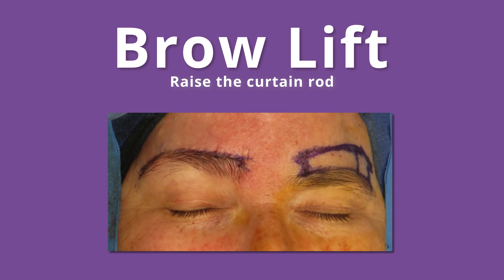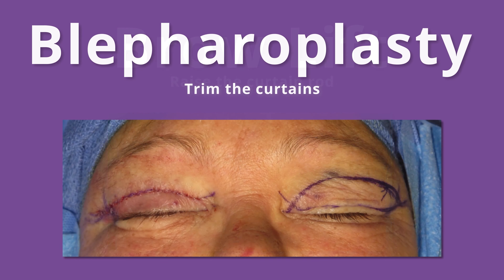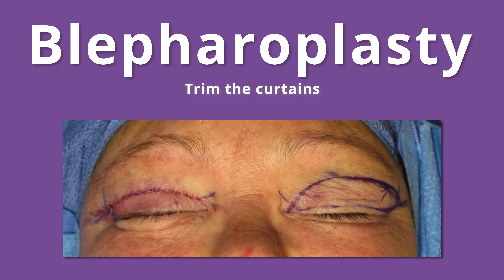This is a picture of a patient who's halfway through a brow lift — this is raising the curtain rod. On her right side, you can see the incision has been closed, the brow is elevated and has a nice shape. The left side hasn't been done yet, but you can see the marking where it's going to happen. This next patient is in the operating room and has had half of a blepharoplasty — trimming the curtains. The skin between the lashes and the brow has been removed on the right side, just the right amount so that the eyelid closes properly and completely without any tension.